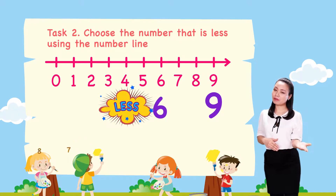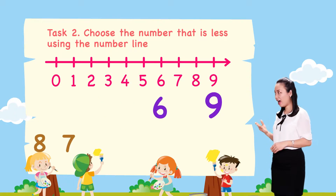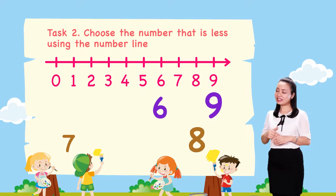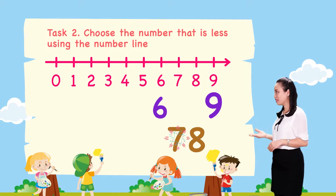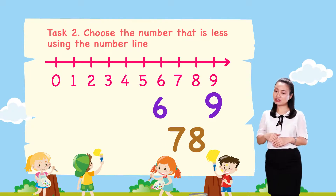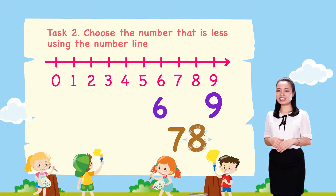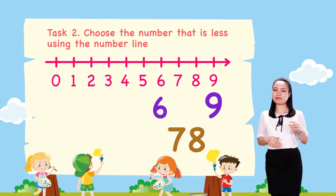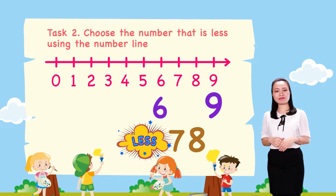For the pair 8 and 7, number 7 is to the left of number 8. So 7 is less.